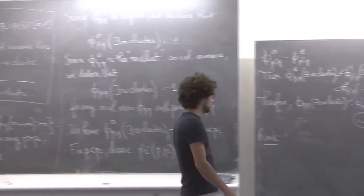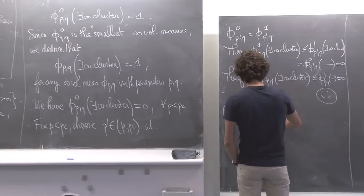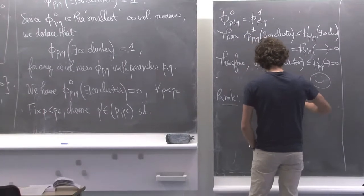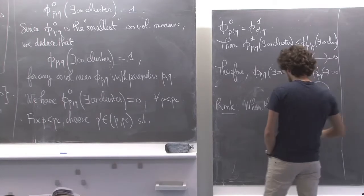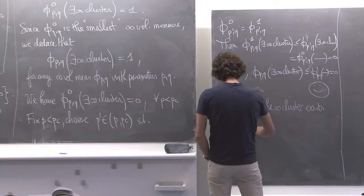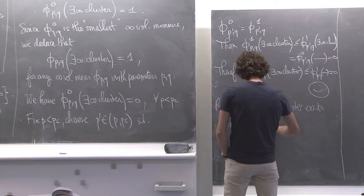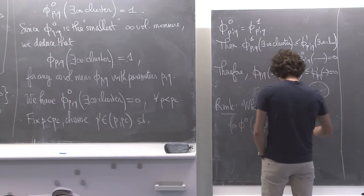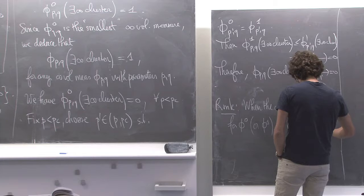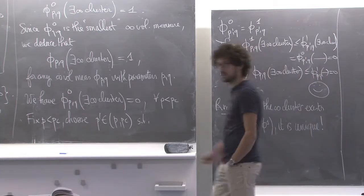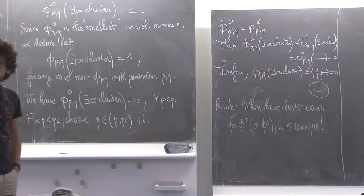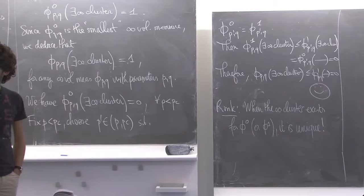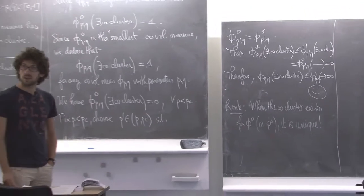This is just a Burton-Keane argument. Try to rerun the Burton-Keane argument and it's going to work very well. The only place where it's going to change, compared to the Burton-Keane argument I presented for percolation, is at some point I really used that I conditioned on everything outside the box and inside it's independent percolation, so I can construct this trifurcation.